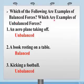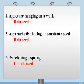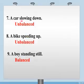Let's see some more examples of balanced and unbalanced forces. An aeroplane taking off — unbalanced forces. A book resting on a table — balanced forces. Kicking a football — unbalanced forces. A picture hanging on a wall — balanced forces. A parachutist falling at constant speed — balanced forces. Stretching a spring — unbalanced forces. A car slowing down — unbalanced forces. A bike speeding up — unbalanced forces. A boy standing still — balanced forces.